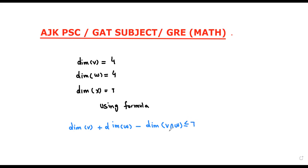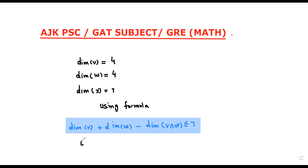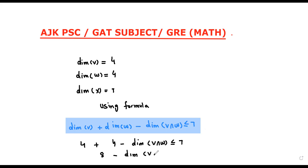This formula states that the dimension is less than or equal to seven because the space X has dimension seven. Substituting the values: four plus four minus dimension of V∩W is less than or equal to seven. So eight minus dimension of V∩W is less than or equal to seven.